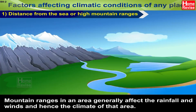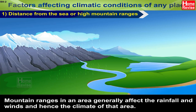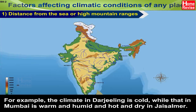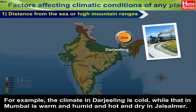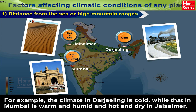Mountain ranges in an area generally affect the rainfall and winds and hence the climate of that area. For example, the climate in Darjeeling is cold, while that in Mumbai is warm and humid and hot and dry in Jaisalmer.